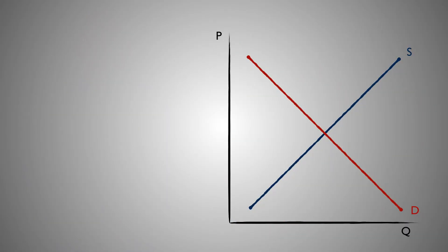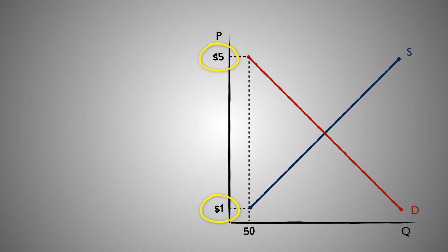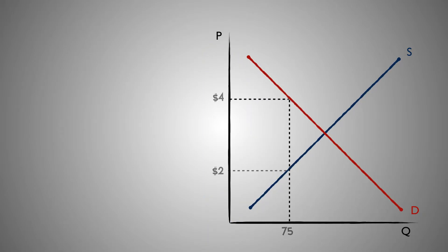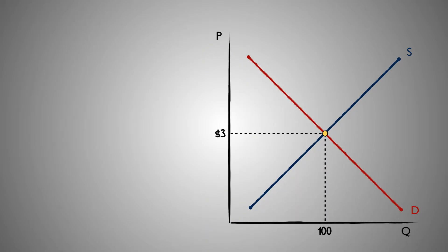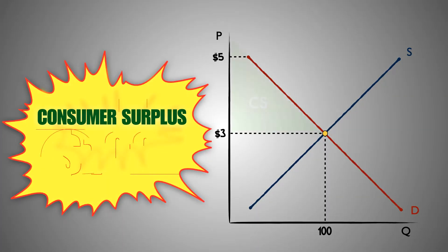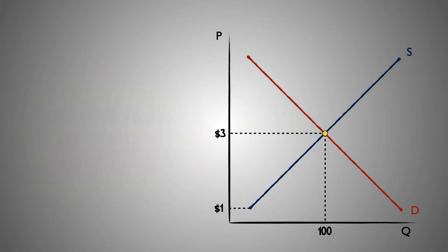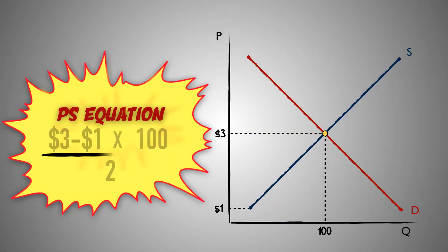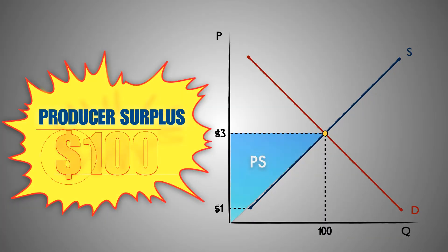For example, suppose that this is the market for Good A. The maximum price that consumers are willing and able to pay for Good A is $5, while the minimum price that firms are willing and able to sell at is $1. Now suppose that supply and demand in the market for Good A establishes an equilibrium price of $3 and an equilibrium output of 100 units. After voluntary exchange between buyers and sellers, the consumer surplus gained by buyers in the market for Good A totals $100, while the producer surplus gained by firms also totals $100.